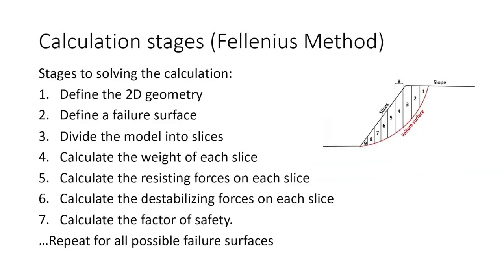Let's now take a look at how we're calculating slope stability. We use seven calculation stages to determine a slope stability factor of safety. First we need to define the 2D geometry considering things like slope height and length. Next we define a failure surface which we assume the slope is failing along. We split the model into a number of different slices. The greater the number of slices, the more accurate the calculation will be. We calculate the weight of each slice and then calculate the resisting force on each slice. Then we calculate the destabilizing force and finally we calculate the factor of safety between resistance and the destabilizing forces. We repeat this process for all possible failure surfaces.